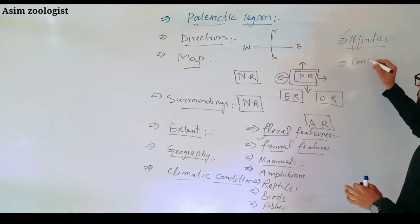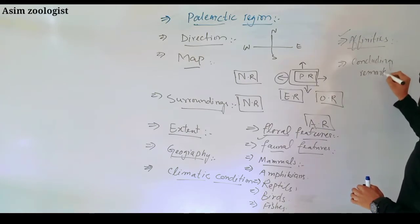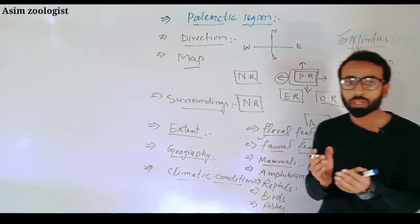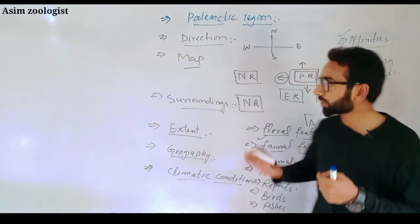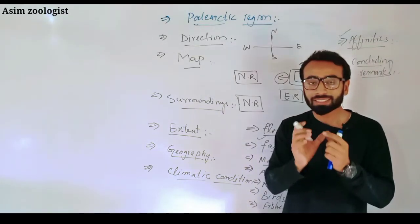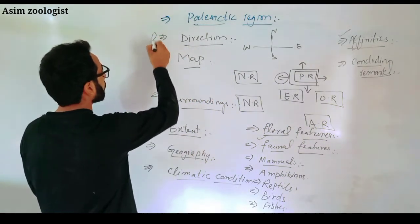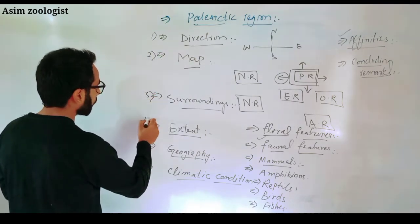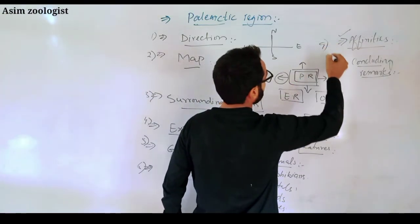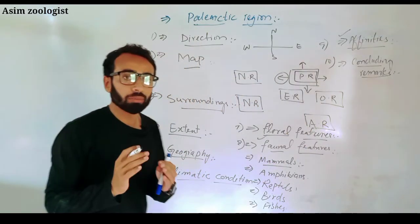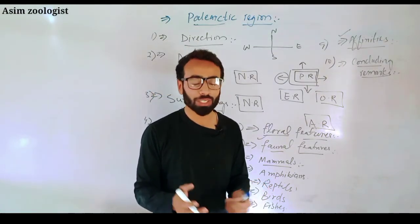The last step — step ten — is concluding remarks. In concluding remarks, you summarize all the things, mentioning what is very unique and important in that particular region. So stepwise, you complete steps 1 through 10 for each and every zoogeographical region. Subscribe to our channel and watch all our videos. Thank you so much for watching. Bye.